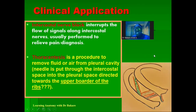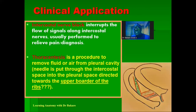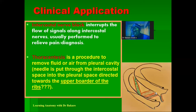Thoracentesis is a procedure used to remove fluid or air from the pleural cavity. A needle is inserted through the intercostal spaces into the pleural space. To avoid damaging the intercostal vessels — which run within the costal groove at the lower border of the rib — the needle is directed through the upper border of the rib below the target intercostal space.